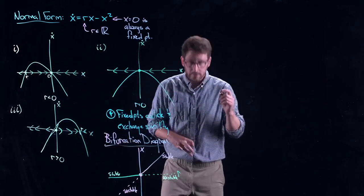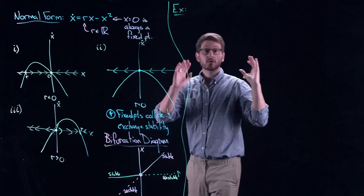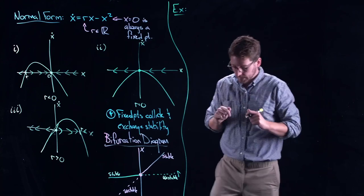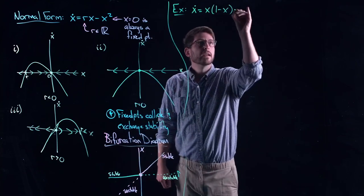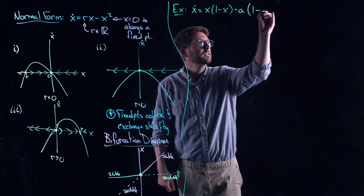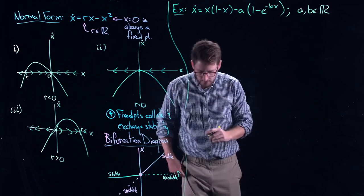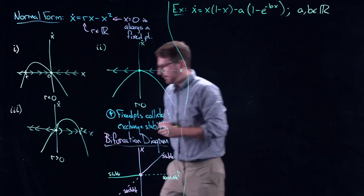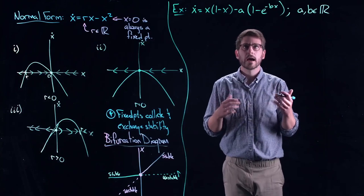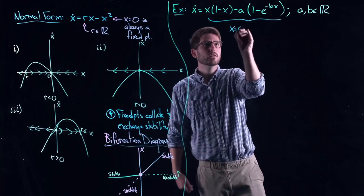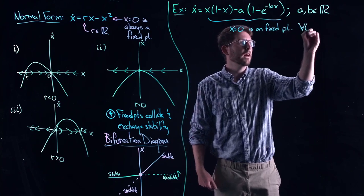Now let's look at another example. These can happen in all kinds of systems; the key feature is two fixed points collide and exchange stability. The new system is ẋ = x(1 - x) - a(1 - e^(-bx)), where a and b are real numbers. This system will also undergo a transcritical bifurcation, and we want to know where and how. The first thing we notice is x = 0 is a fixed point for any value of a and b.